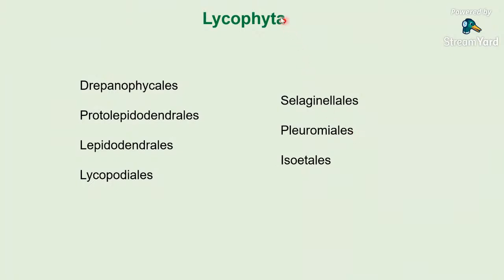As far as Lycophyta is concerned, we get 7 orders: Drepanophycales, Proto-Lepidodendrales, Lepidodendrales, Lycopodiales, Selaginellales, Pleuromyelales, and Isoetales. In lycophytes, there are two types of habit: herbaceous or arborescent/subarborescent. We get both homospory and heterospory. There are two series — ligulate and eligulate: where a ligule is present, plants are generally heterosporal; where absent, generally homosporal — with one exception: Leclercchia is eligulate but shows homospory.